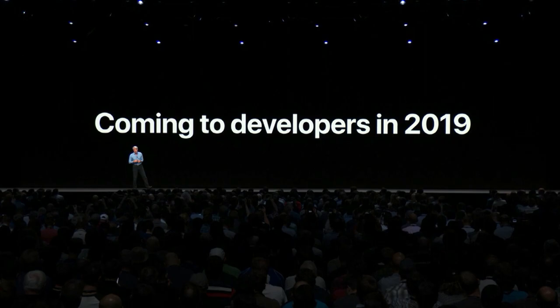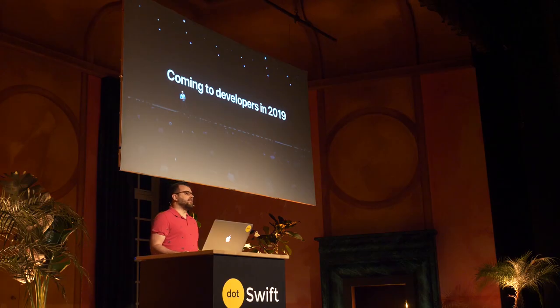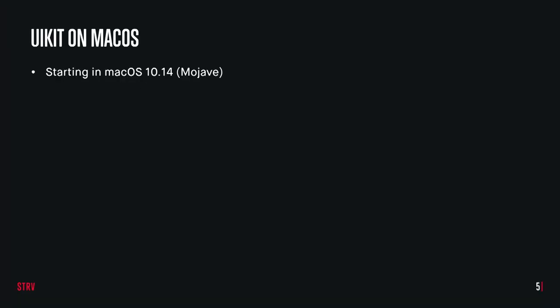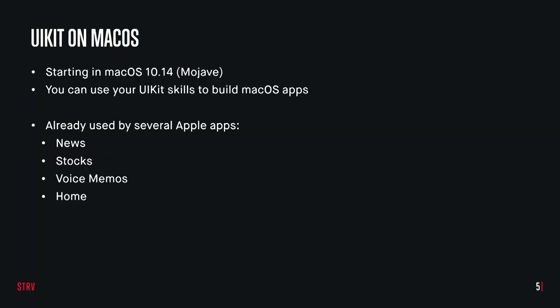At WWDC 2018, Apple kind of stealthily unveiled this project and mentioned that it might be ready for us in 2019. So fingers crossed. But what is it, actually? It comes in Mojave, and what it basically means for you developers is that you can use your iOS UIKit skills to build macOS apps, which is tremendously cool. Apple have been dog-feeding this to themselves for quite a while. You might have noticed that News, Stocks, Voice Memos, and those apps look and feel kind of different — and that's because they're Marzipan apps.